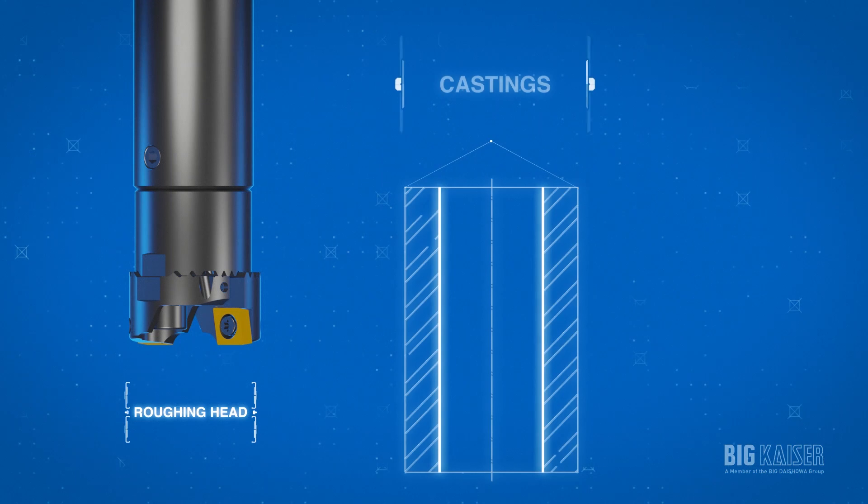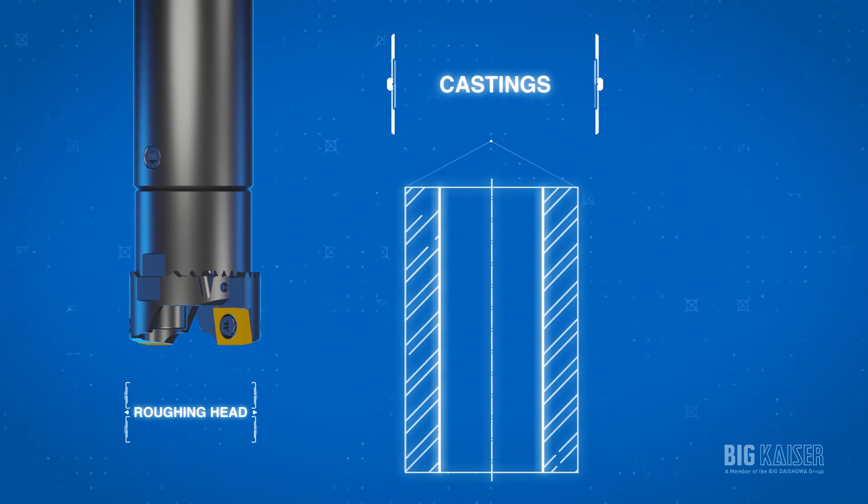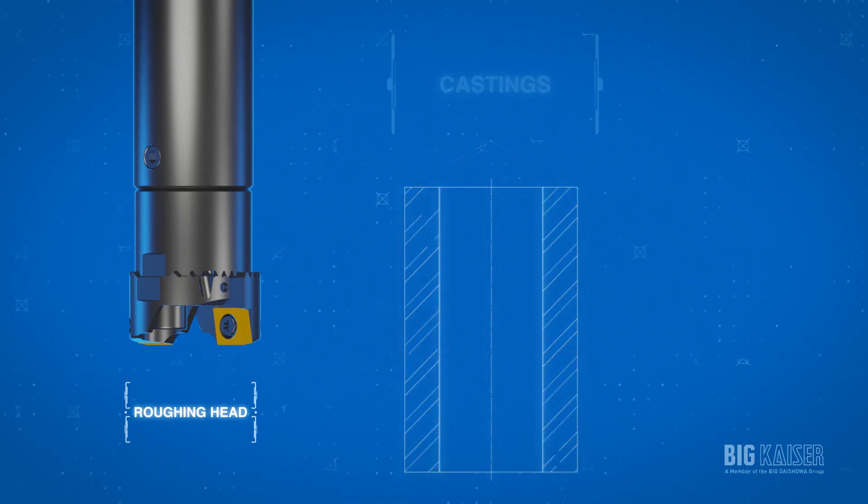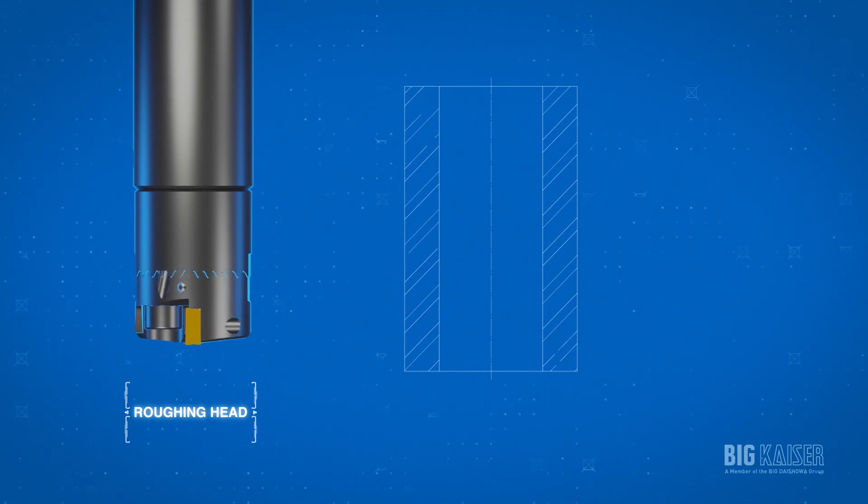A part made from a casting process will typically have holes well undersized. The holes also tend to be curved, ovular, and out of position to some degree. A roughing head should be used to prep these holes.